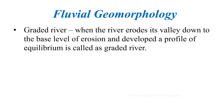When the river erodes its valley down to the base level of erosion and develops a profile of equilibrium, it is called a graded river. Before the development of this profile it was not a graded river, but after its development only transportation occurs — no erosion and no deposition. If energy is in excess, erosion occurs; if energy is in deficit, deposition occurs. The profile at that condition is called the profile of equilibrium.